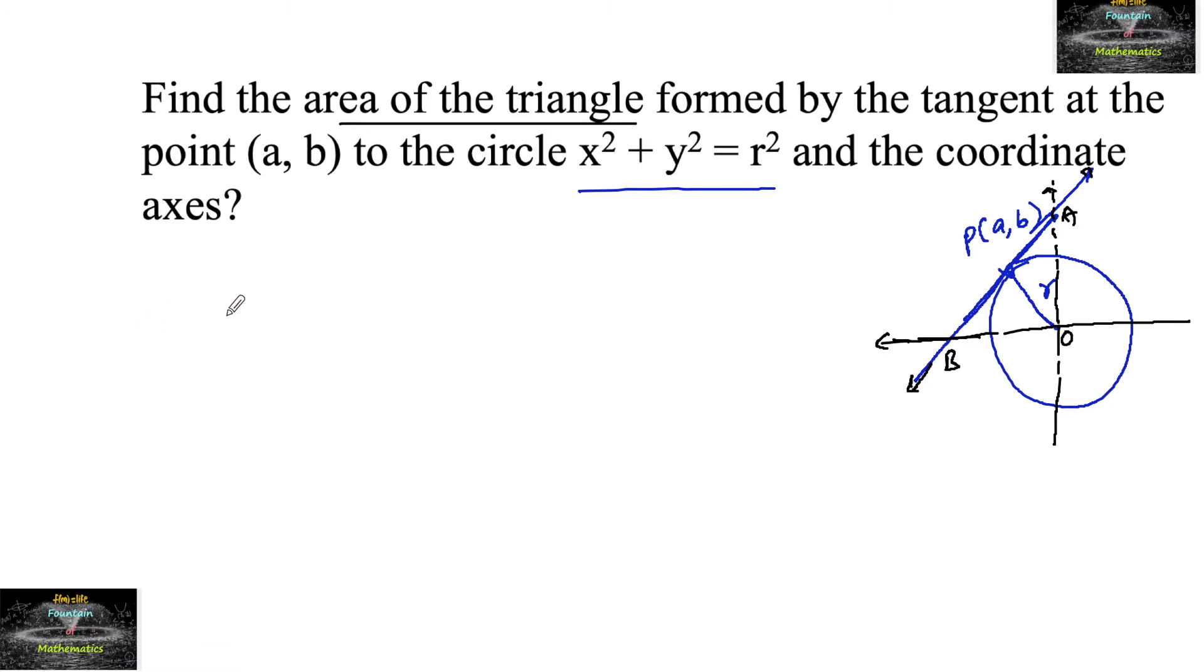First let us write the tangent equation. The tangent equation at point P(a, b) for circle x² + y² - r² = 0 can be taken as xx₁, that is x·a + yy₁, that is b·y - r² = 0 as the tangent equation.